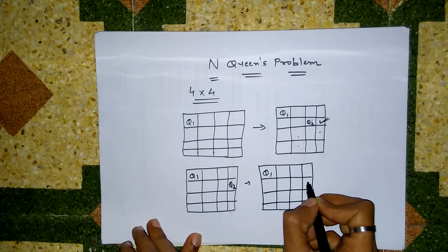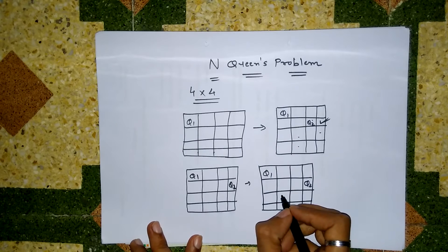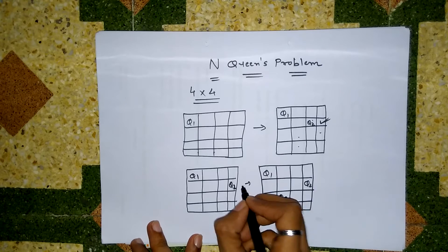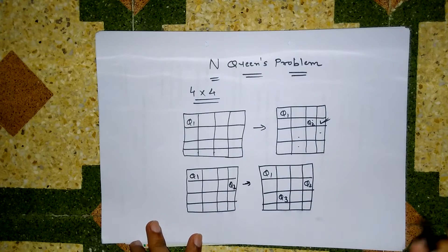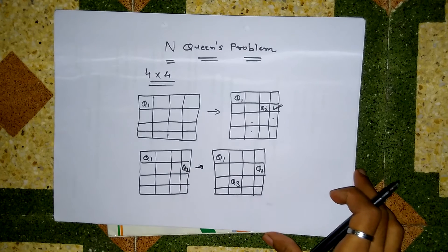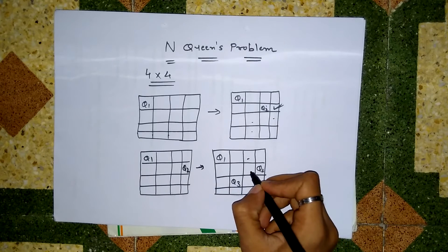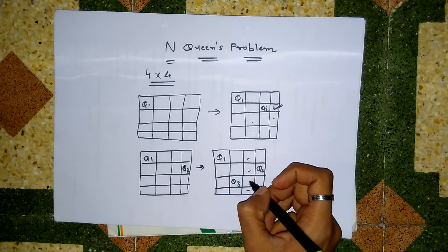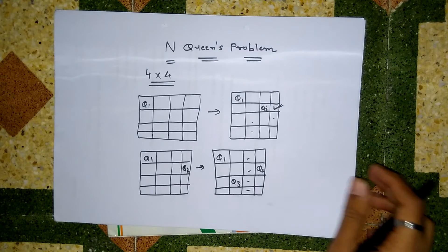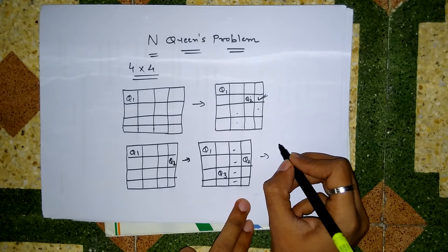Now Q1 is here, Q2 is here, and we can put Q3 here. These three queens cannot attack each other. Now where can we put our fourth queen? We cannot put it here, or here, or here.